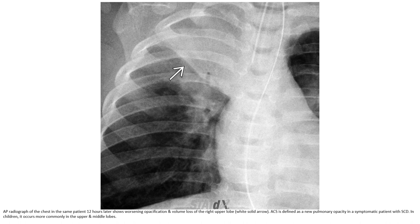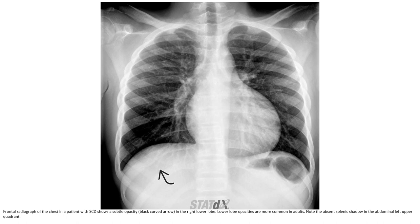Acute chest syndrome is defined as new pulmonary opacity in a symptomatic patient with sickle cell disease. In children, it occurs more commonly in the upper and middle lobes. This frontal radiograph of the chest in a patient with sickle cell disease shows subtle opacity in the right lower lobe; lower lobe opacities are more common in adults.